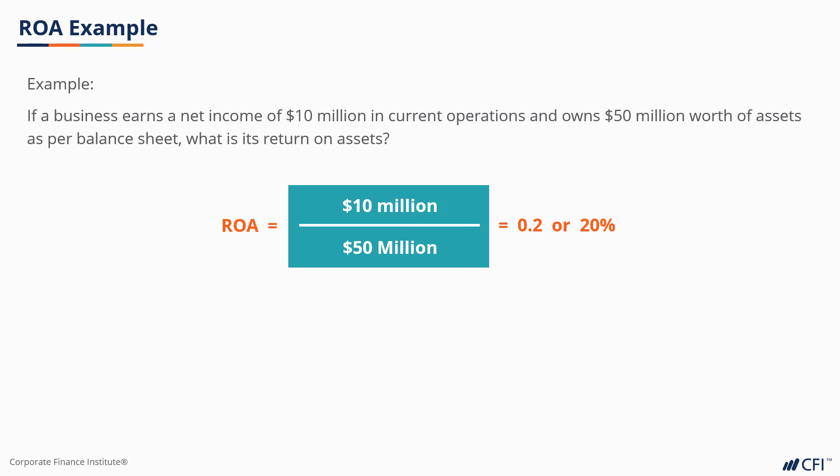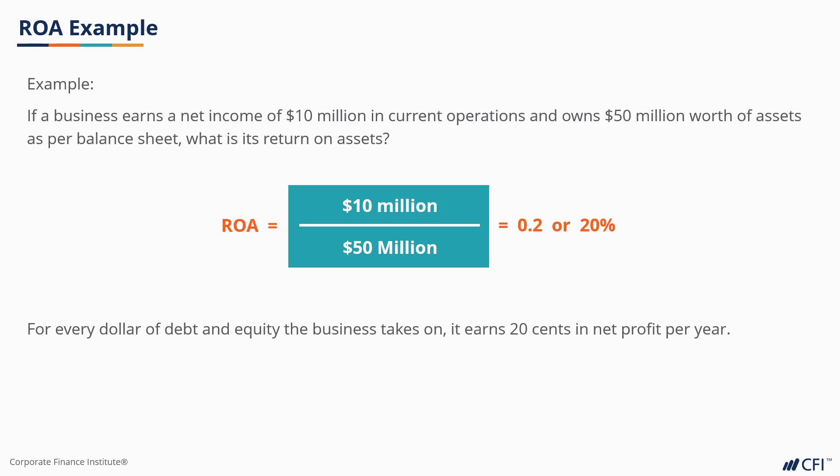10 million of net income divided by 50 million of assets is 0.2, multiplied by 100 is 20%. That means on an annual basis, this company earns a 20% rate of return on its assets.